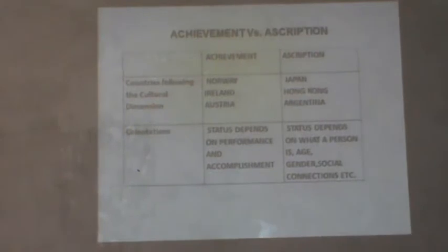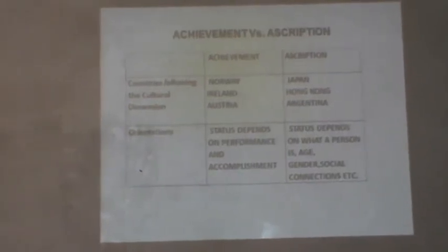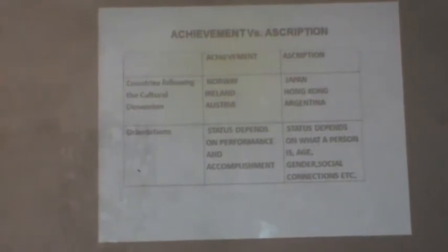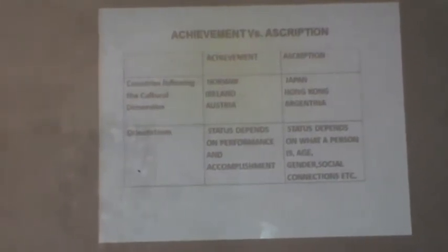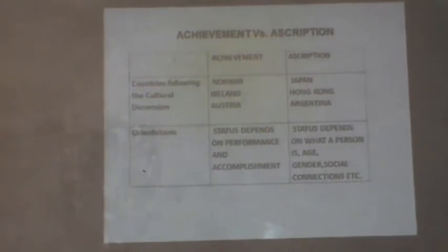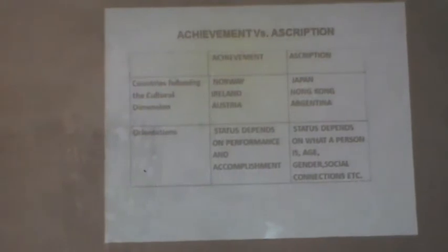Achievement versus Ascription: in achievement-oriented cultures, status depends on performance and accomplishment — not age or experience. Countries include Norway, Ireland, and Austria. In ascription-oriented cultures, status depends on what a person is — their age, gender, and social connections. Countries include Japan, Hong Kong, and Argentina.